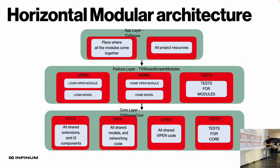The feature layer is called TV Show Screen Modules because it will keep all of our screens — the login screen and the home screen. You can also see that we have an independent test target for the TV Show Screen Modules layer. Then we have the core layer, which is basically all of the code that is shared between all of the screens: utilities, extensions, UI components, shared models, networking code, and other shared code. We also have an independent test target for the core layer.